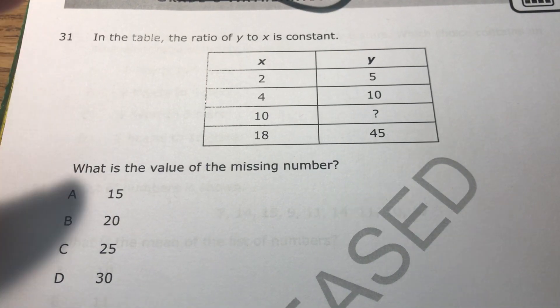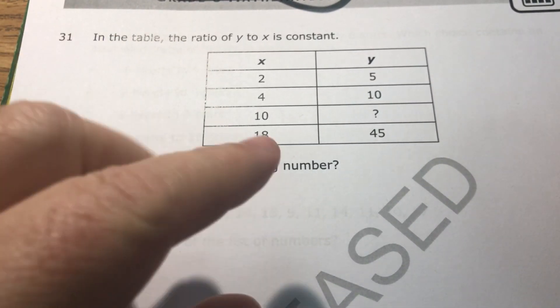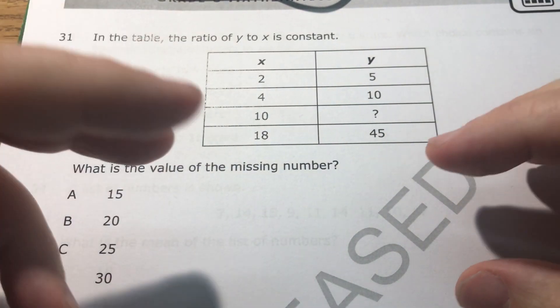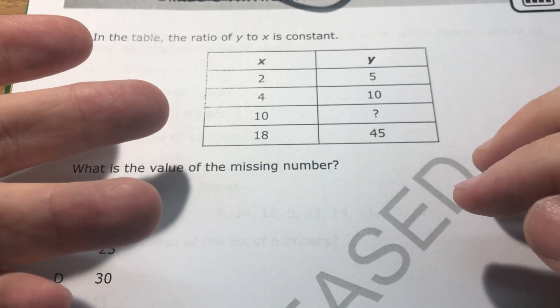On this question it says in the table the ratio of y to x is constant. When it says it's constant, all it means is that it is proportional, that it is a ratio that if you went back to zero for one you'd have zero for the other.